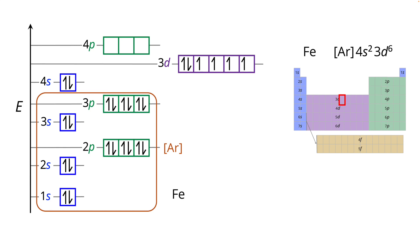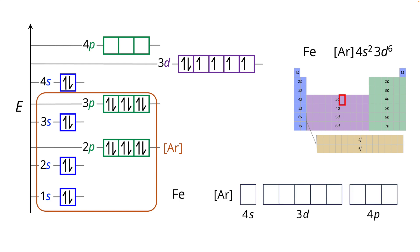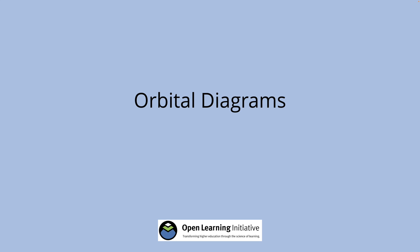Our condensed orbital diagram for iron is [Ar] 4s² 3d⁶, explicitly showing the electrons, which orbitals they're in, and their spin states. And that's it for an introduction to orbital diagrams.